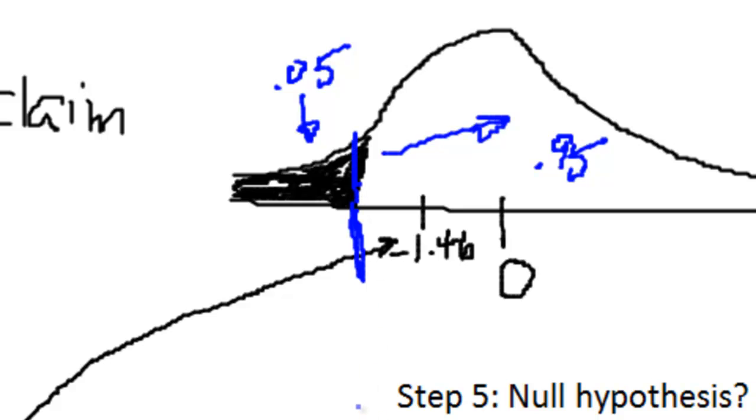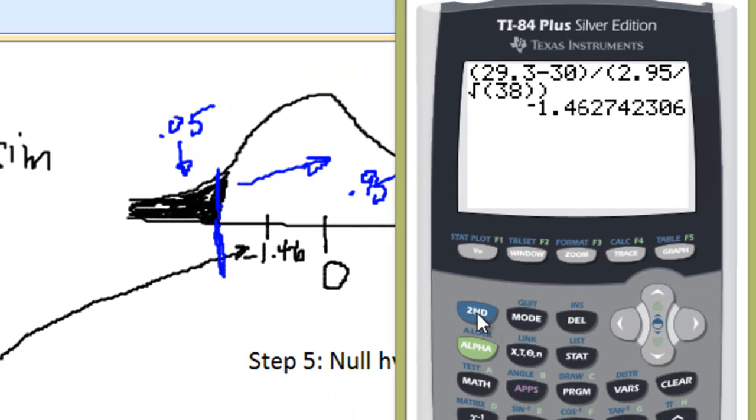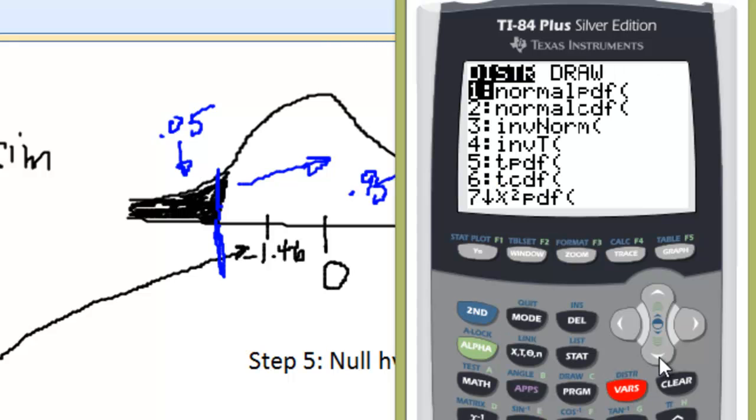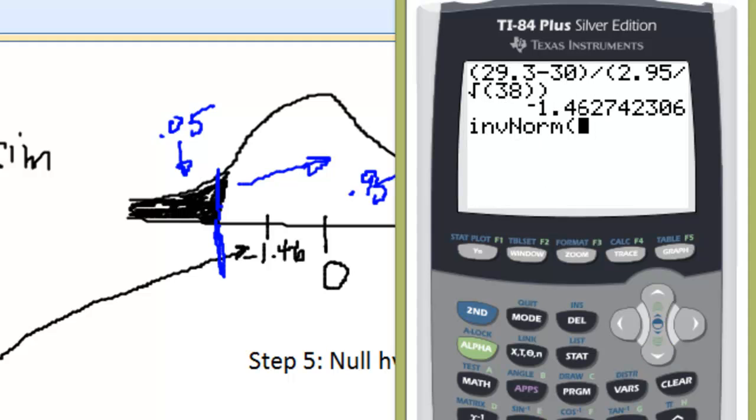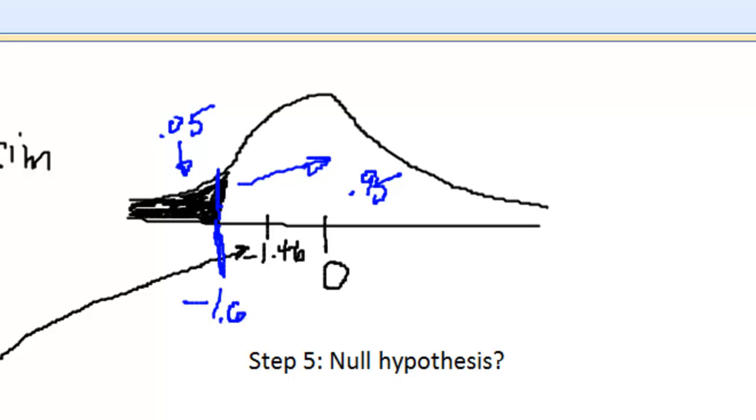Well, you could look this up on a table. You could actually, if you have your calculator, you can use inverse norm. That works as well. I'll show you how to do that with your TI-83 or 84. You just hit second distribution, go down to the third option, which is inverse norm. And if you feed it .05, you'll see that it gives you a critical value of negative 1.64, negative 1.64.